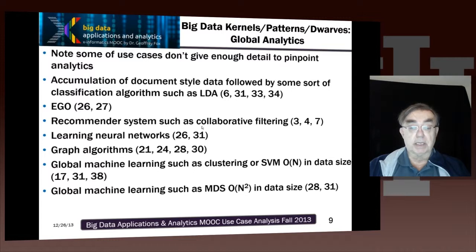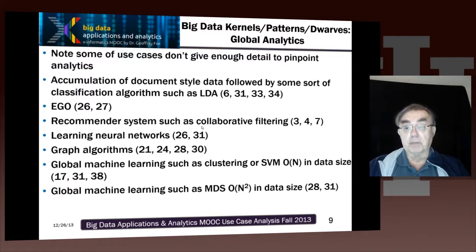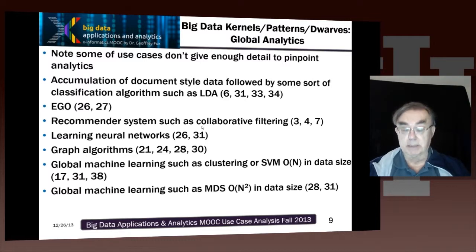When we come to machine learning, we can look at the global ones — those are the big problems. You can see two different classes. One, like support vector machines, has a computational complexity on the order of the number of points in the data set, whereas something like multi-dimensional scaling goes like the square of the number of points in the data set.